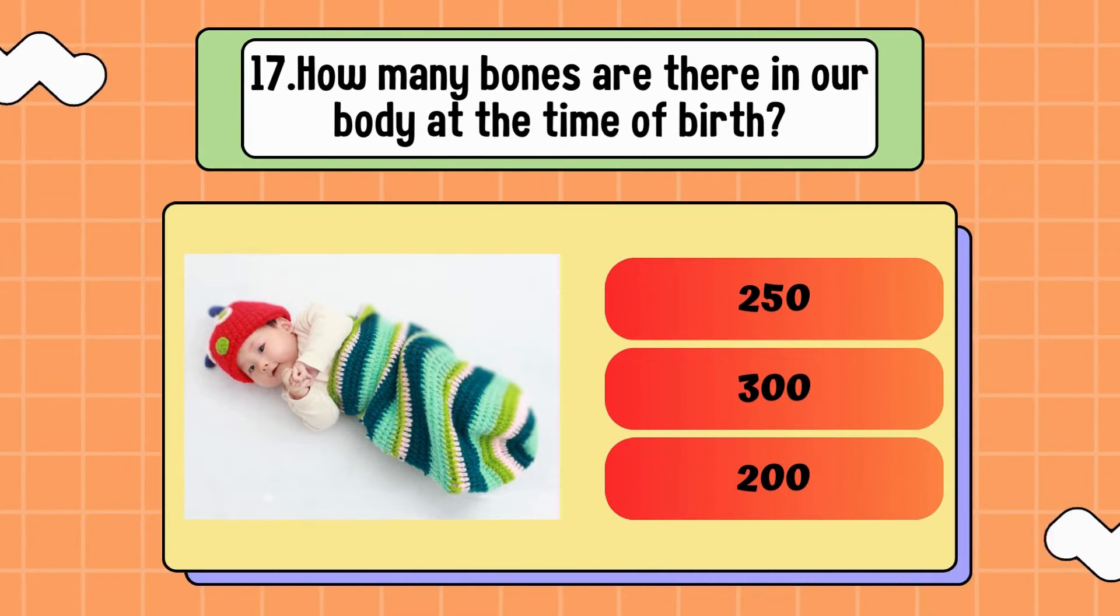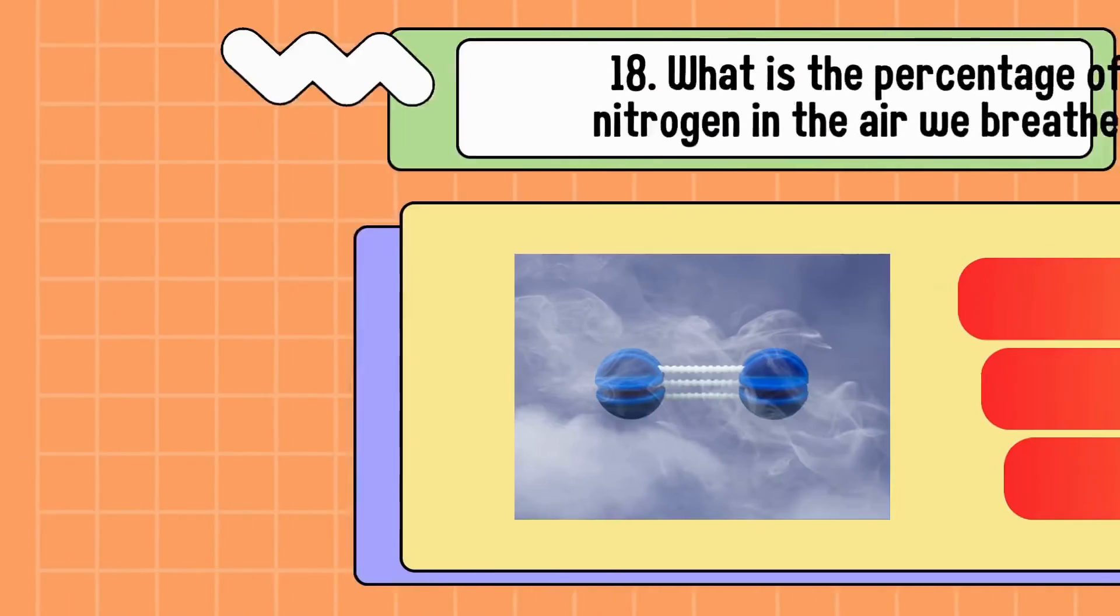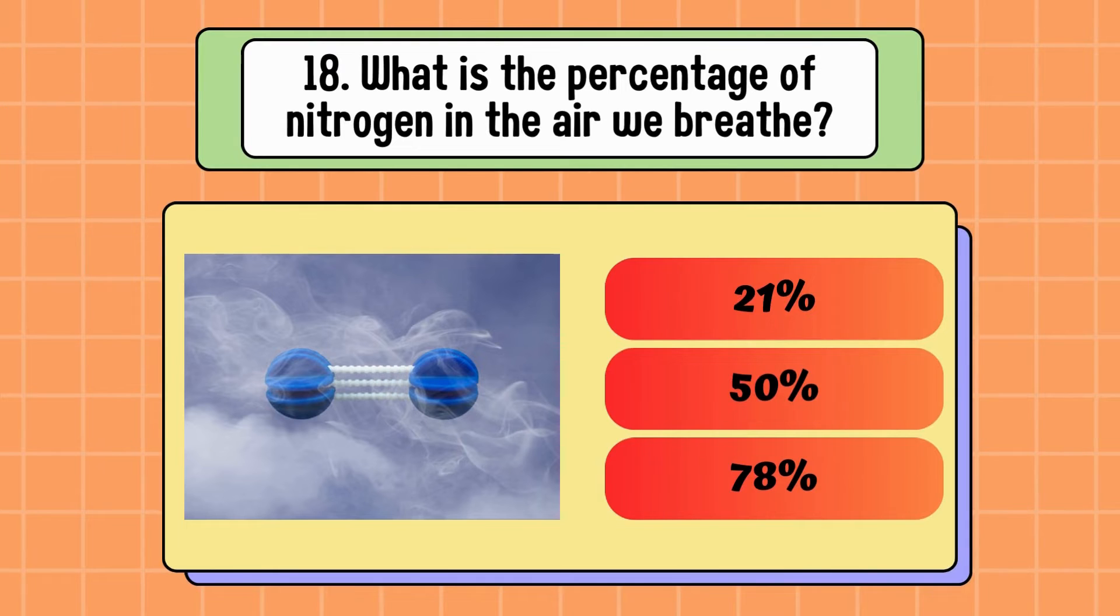How many bones are there in our body at the time of birth? 250, 300, or 200? Correct answer is 300. What is the percentage of nitrogen in the air we breathe? 21%, 50%, or 78%? Answer is 78%.